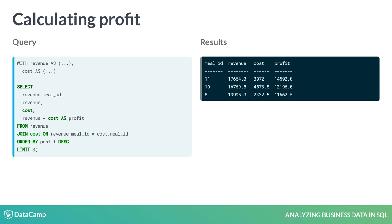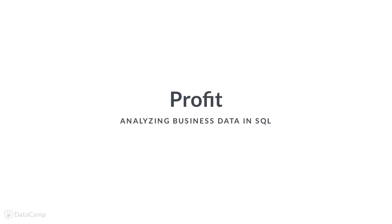Finally, subtract cost from revenue to calculate profit. This particular query orders by profit in descending order and returns only the top three meals by profit. You now have the tools to answer core business questions about profit. In the following exercises, you'll calculate profit by…